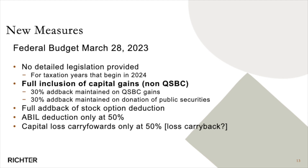30% on QSBC shares is maintained. What I mean by QSBC gains is the gains sheltered by the lifetime capital gains exemption — only 30% of that will be included in your net adjustable taxable income. A new change is that 30% of your capital gains on donation of public securities will be included in your net adjustable taxable income. It used to be zero.